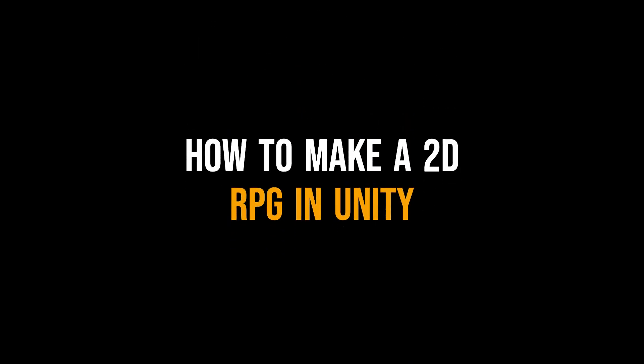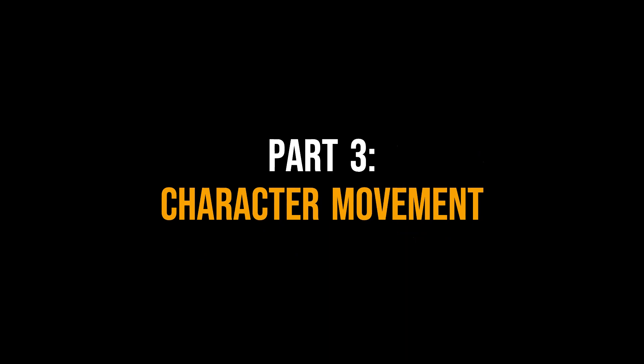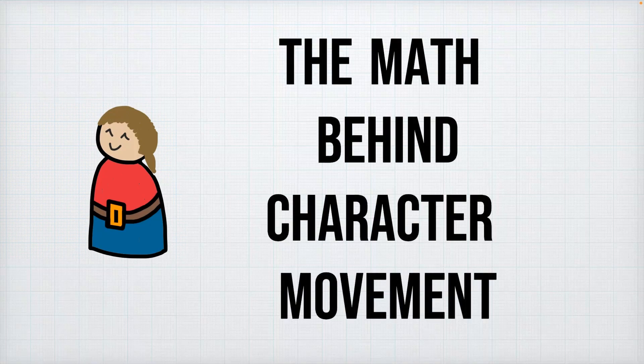Hello everyone and welcome to part 3 of how to make a 2D RPG in Unity. In this part we're going to be going over the theory of how to create our character controller and get our player walking around in the world. So let's get started.